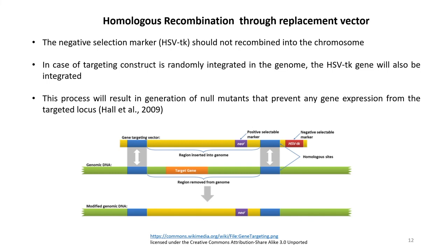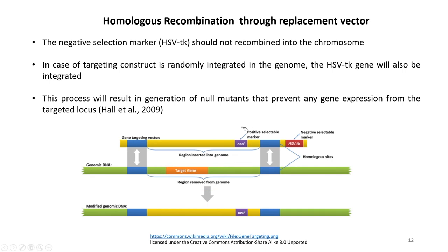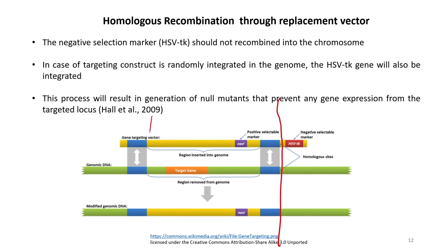The negative selection marker HSV TK should not be recombined into the chromosome. If the targeting construct is randomly integrated in the genome, the HSV TK gene will also be integrated. This process results in generation of a null mutant that prevents any gene expression from the targeted locus, resulting in loss of function. The HSV TK marker is not included in the targeted region.